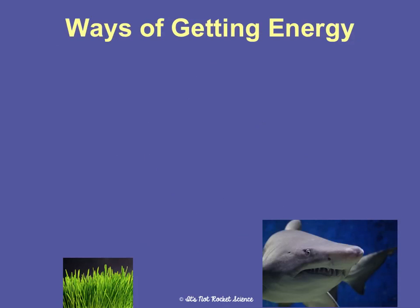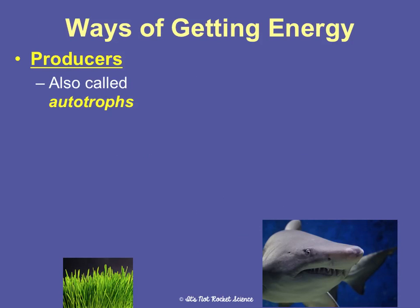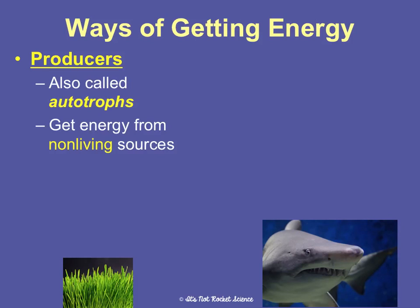There are basically two ways of getting energy. You can be a producer, also known as an autotroph. 'Auto' means self, and 'troph' refers to nourishment. So producers are self-nourishers, meaning they can make their own food from non-living sources. When I say make their own food, I don't mean go into a kitchen and make a sandwich — their actual bodies create food for themselves, which you can't do.